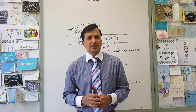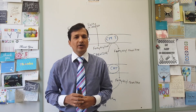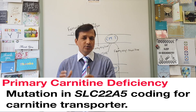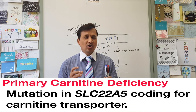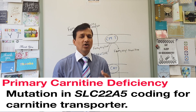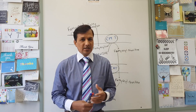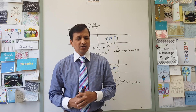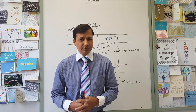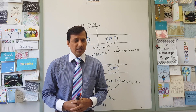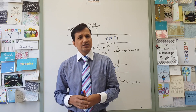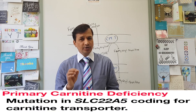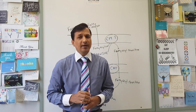Primary carnitine deficiency is caused by a mutation in the gene coding for a transporter, SLC22A5. This SLC22A5 transporter is the carnitine transporter in our body, allowing transport of carnitine into the cells. The liver synthesizes carnitine and transports it to other tissues, so SLC22A5 is important for tissues to utilize carnitine. A mutation in this transporter causes primary carnitine deficiency.